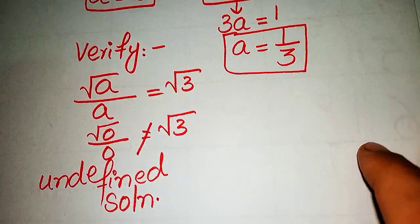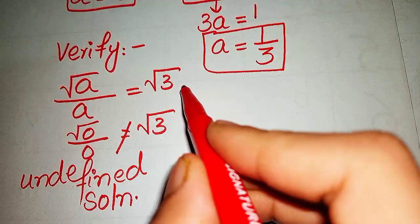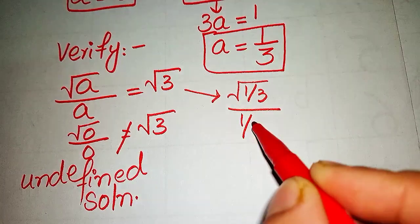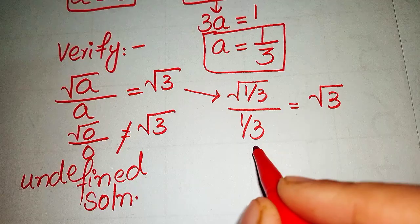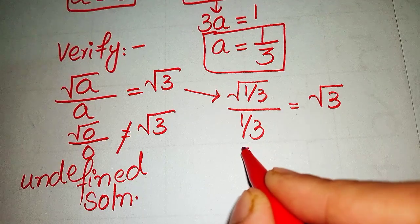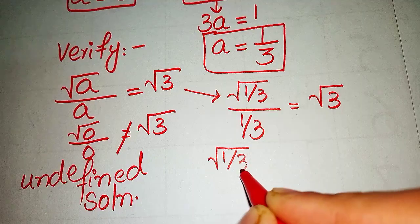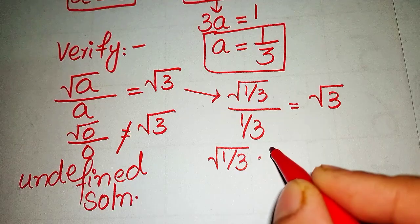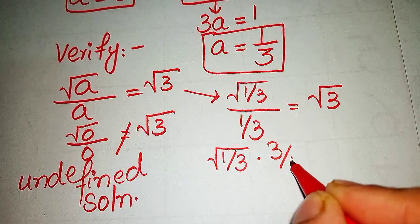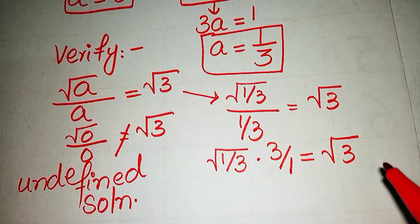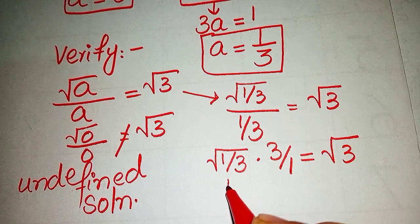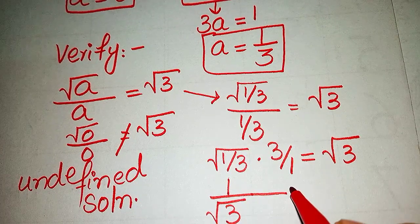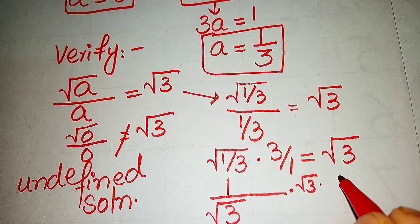Now we put a = 1/3 into the equation: √(1/3) / (1/3) = √3. We rewrite √(1/3) and multiply by 3 (moving 1/3 to the top), which gives us 3/1 times √(1/3), and we can write this as 1/√3 times 3, which equals √3 · √3 / √3.